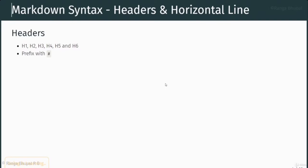Let's learn about Markdown syntax. We'll start with headers. Headers have six varieties, just like basic HTML. All we need to do is prefix with a hash followed by our text. For example, one hash gives H1, and if we want H2, H3, or H4, we increase the number of hash prefixes. In case of H2 use two hashes, H5 use five hashes. Each has its own styling — H1 will be the biggest and H6's font size will be equal to paragraph font size.